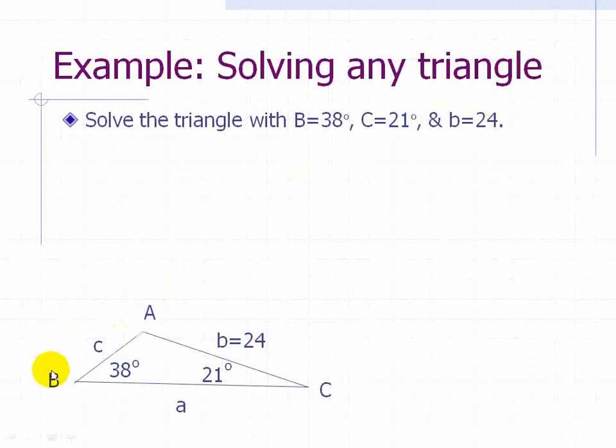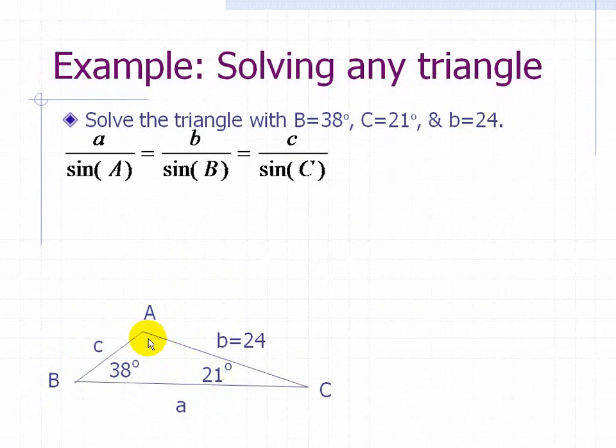So here's a picture of what we're given. In this case, we know that 38 degrees and 21 degrees plus some angle A is equal to 180 and we can solve for that. But using the Law of Sines as shown here, we can solve for that triangle now.